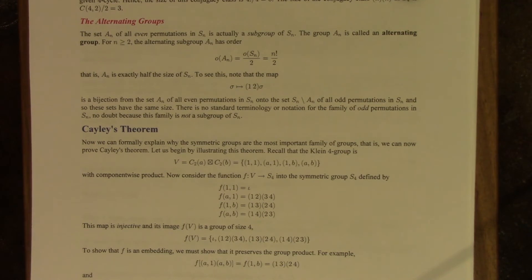There's no standard notation or terminology, as far as I know, for the family of odd permutations, and that's probably because that is not a subgroup, so you can't work with it so easily.